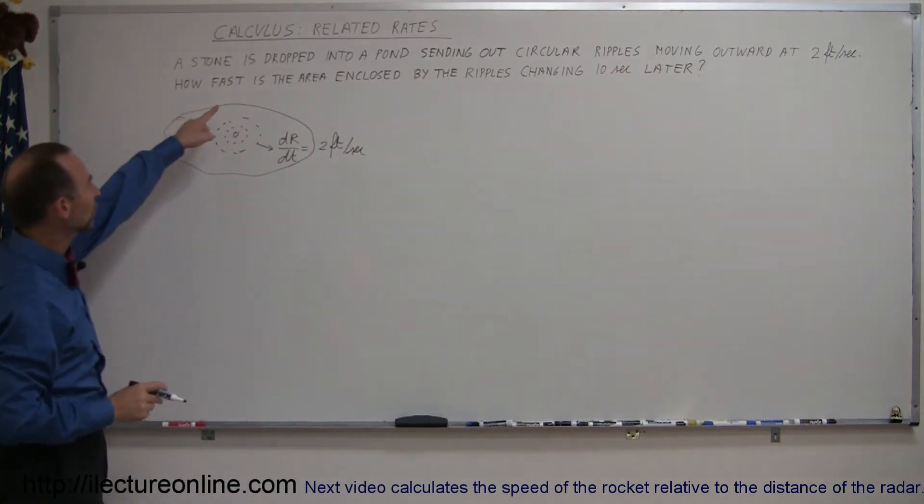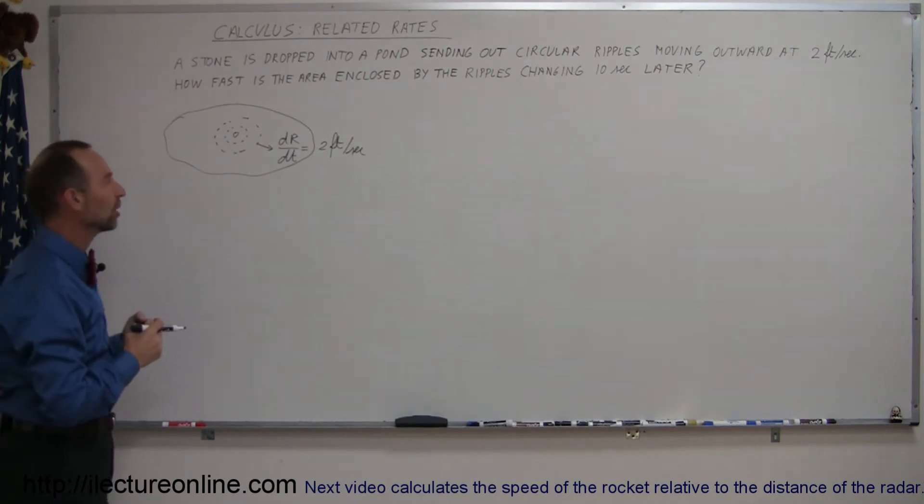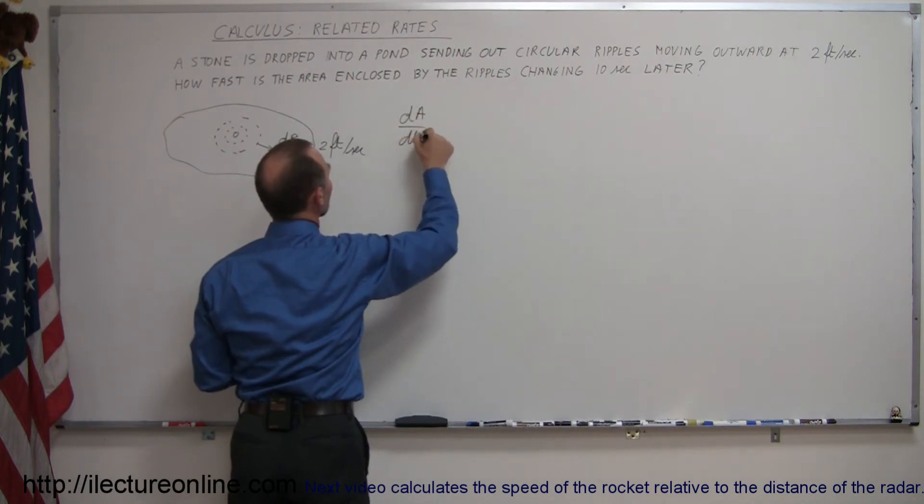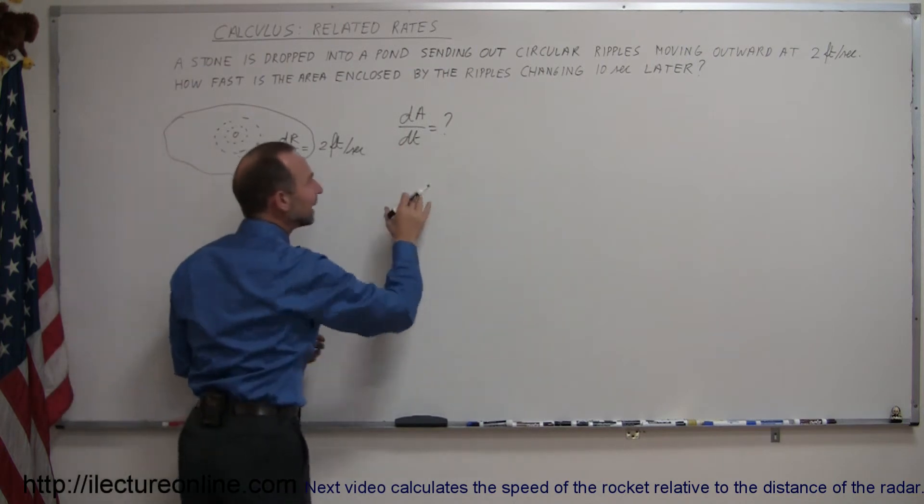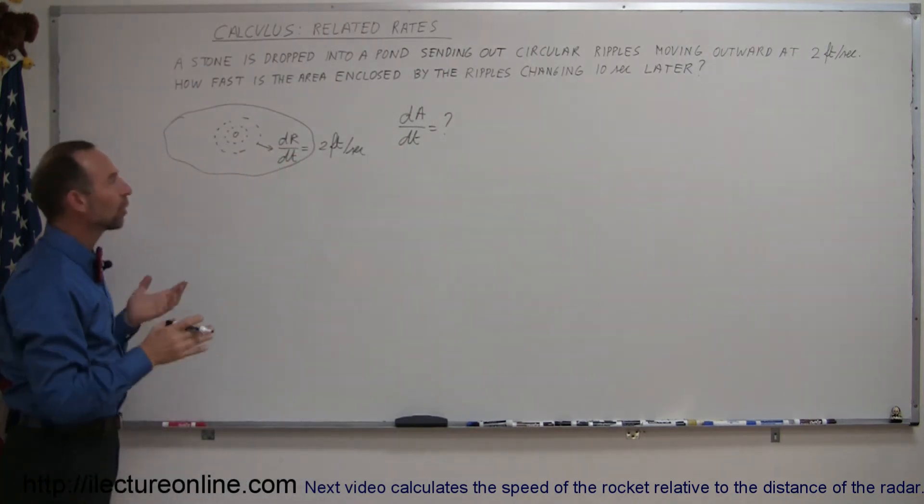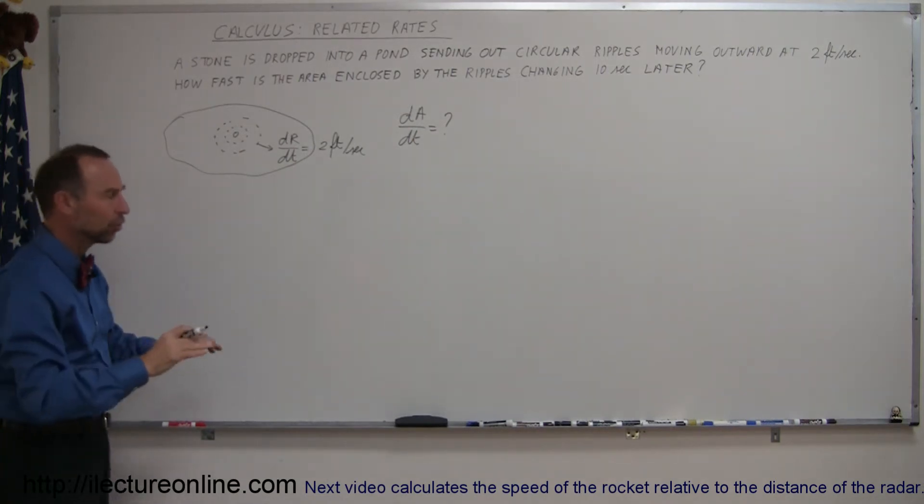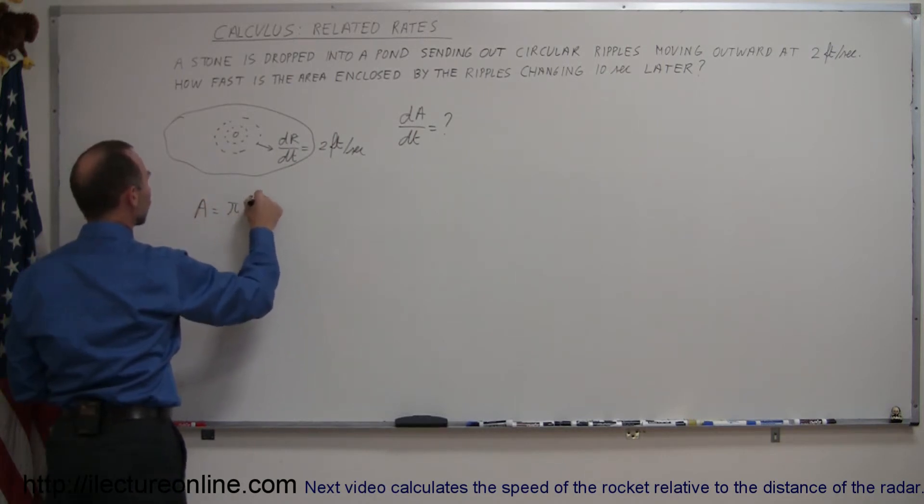What they want to know is how fast the area enclosed by those ripples is changing. So they want to know what dA/dt is. Since they give you dr/dt and want to know dA/dt, we need to come up with an equation that relates those two together. We want an equation that relates the area and the radius. Since we're dealing with the area of a circle, we can say that the area of a circle is equal to πr².